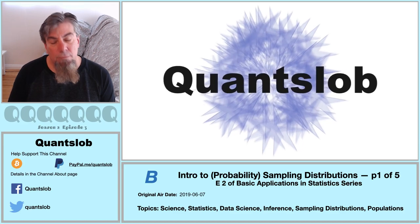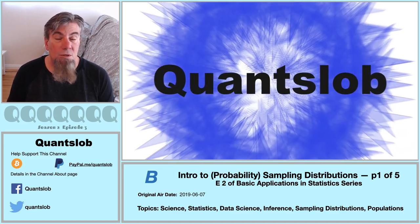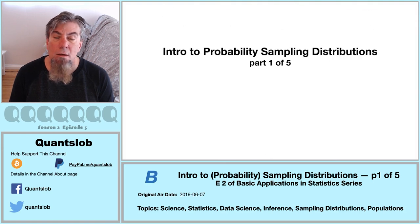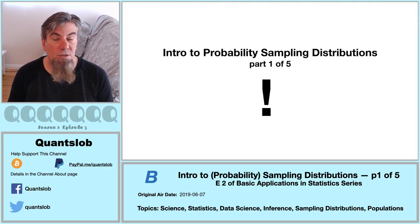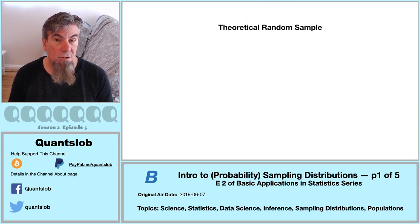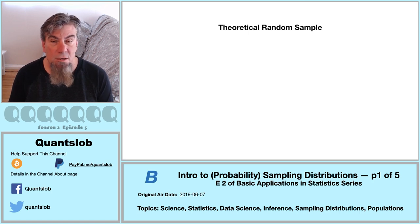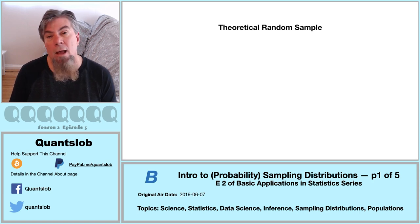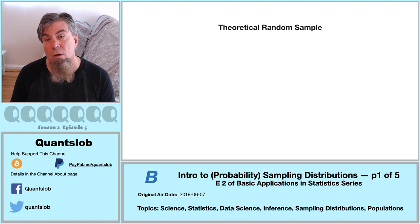Greetings and welcome to another installment of QuantSlob. This is the second in our basic application series. This time around, we're going to kick off our mini-series on probability sampling distributions, picking up basically where we left off in our foundational series with our discussion on probability. Our first order of business is to be very clear on the difference between a theoretical random sample and what could be meant by the term random sample — we've got to be careful with terminology here.